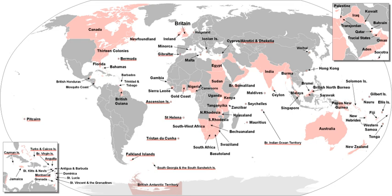South Australia Colony. South Georgia and the South Sandwich Islands. South Africa. Rhodesia. Sarawak. British Strait Settlements. Singapore. Egypt. Tanganyika. Tasmania Colony. Jordan. Transvaal Colony.